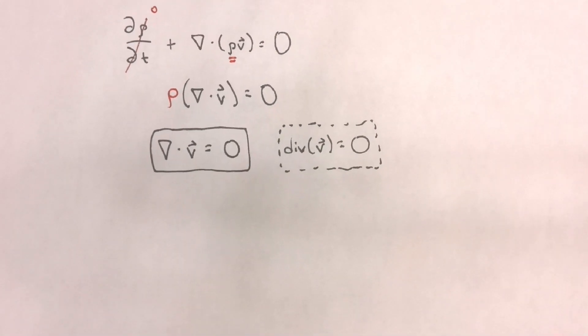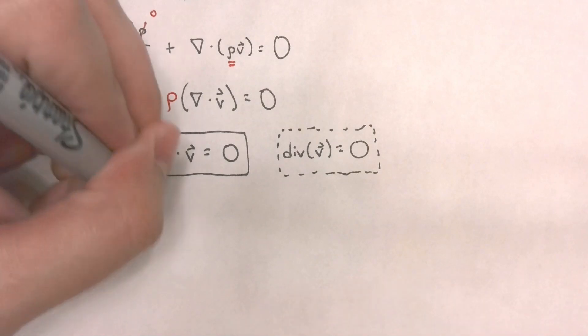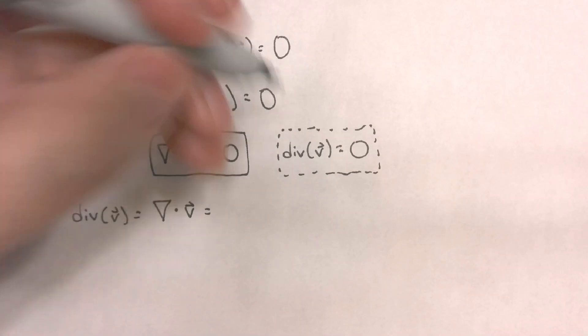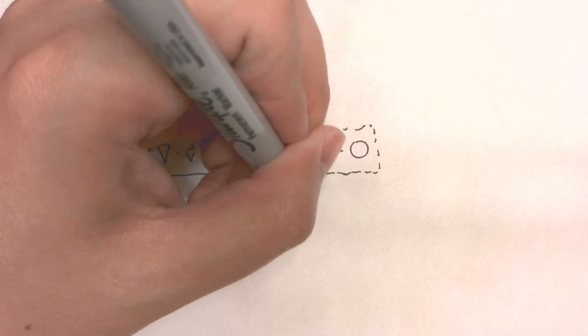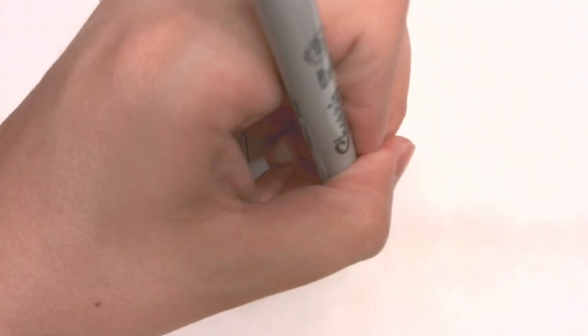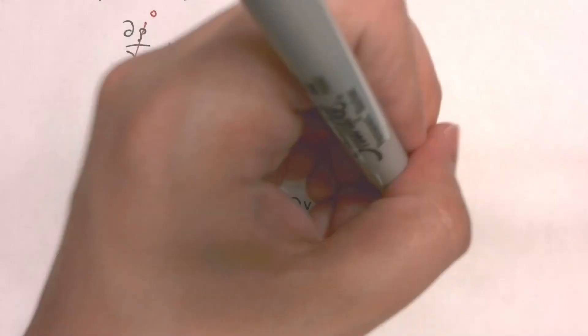We know that mathematically, the divergence of a velocity vector, which is also equal to del dot V, is equal to the partial change of the x component of the velocity with respect to x, plus the partial change of the y component of the velocity with respect to y, plus the partial change of the z component of the velocity with respect to z. Following the continuity equation for incompressible flow, all of this should be equal to zero.